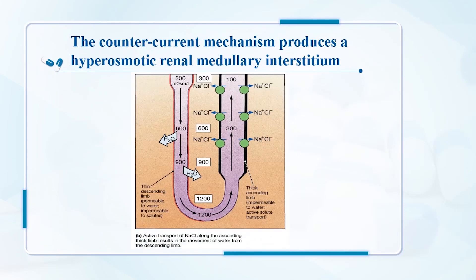Active transport of sodium chloride happens along the ascending thick limb. It does this mainly by actively pumping out salts in the ascending limb. This creates some very salty interstitial fluid in the medulla.